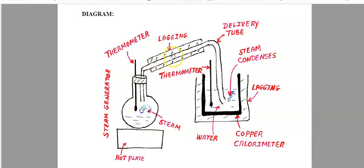The generated steam will move up through the delivery tube and into this part of the apparatus. The steam will then go into cold water in a cold calorimeter. One thing to note is that the delivery tube is actually sloped backwards towards the steam generator. This is to make sure that any steam that condenses and turns to water in the delivery tube will flow back into the steam generator and not forward into the calorimeter. We insulate the calorimeter with some lagging to prevent heat loss to the surroundings, and we have a thermometer in this part of the apparatus as well.